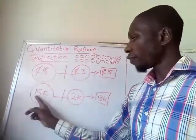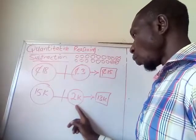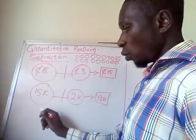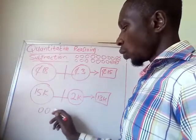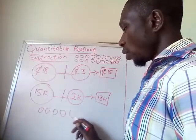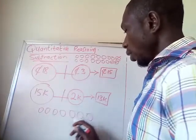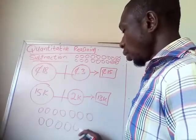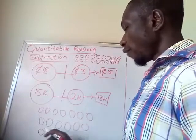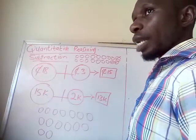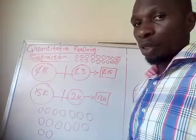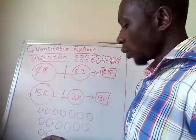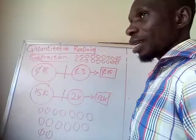The second example is 15 kobo minus 2 kobo. You count 15 kobo — 1 through 15 — and let's assume these are the 15 kobo captured on the board. You are supposed to subtract 2, so these 2 are already taken out here.